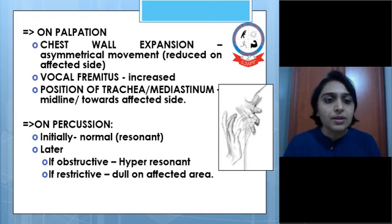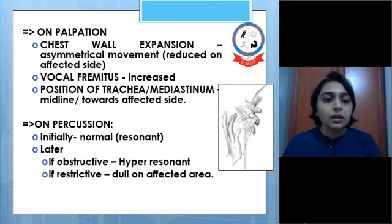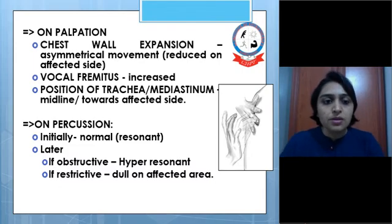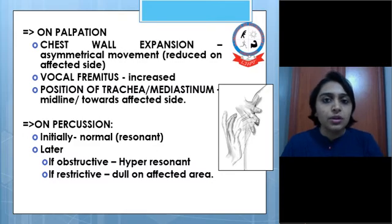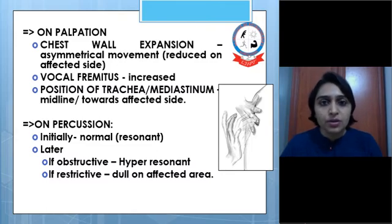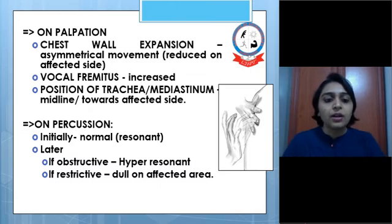On palpation, we may see asymmetrical movement reduced on the affected side if it is unilateral involvement. Vocal fremitus is usually increased, and the position of the trachea or mediastinum may be midline in bilateral involvement or initial phases, or may shift towards the affected side in unilateral involvement. On percussion, initially we may find a normal or resonant sound; later in the obstructive phase we may find hyper-resonance, and in the restrictive phase, dullness over the affected area.